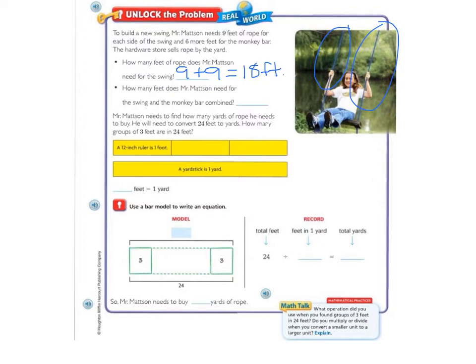The second question asks, How many feet does Mr. Mattson need for the swing and the monkey bar combined? So we know that we need 18 feet for the swing plus 6 more feet for the monkey bar. 18 plus 6 equals 24 feet.